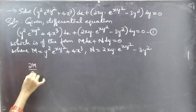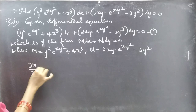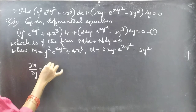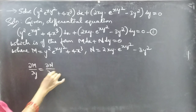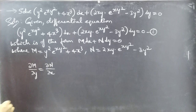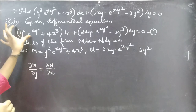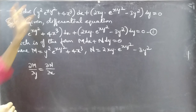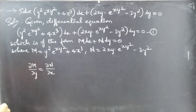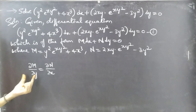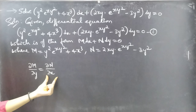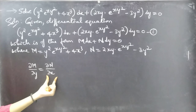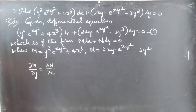If the partial derivative of M with respect to y equals the partial derivative of N with respect to x, then we can say that the given differential equation is an exact equation. So let's now find ∂M/∂y and ∂N/∂x.